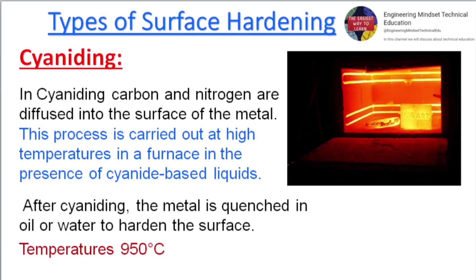Cyaniding: carbon and nitrogen are diffused into the surface of the metal. This process is carried out at high temperatures in a furnace in the presence of cyanide-based liquids. After cyaniding, the metal is quenched in oil or water to harden the surface. Temperature: 950 degrees Celsius.